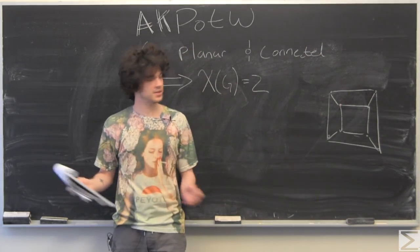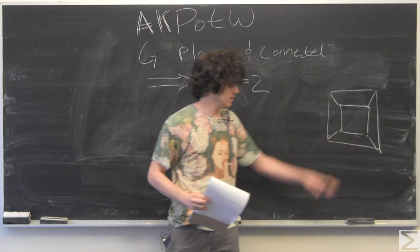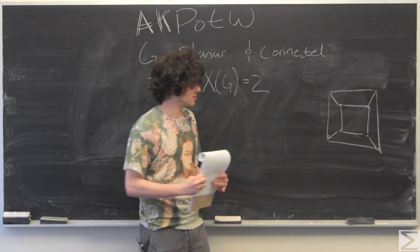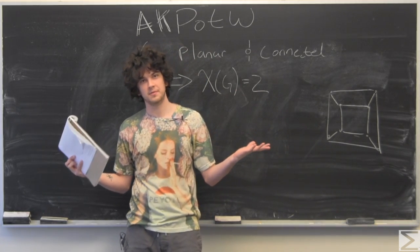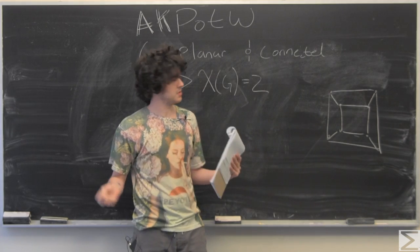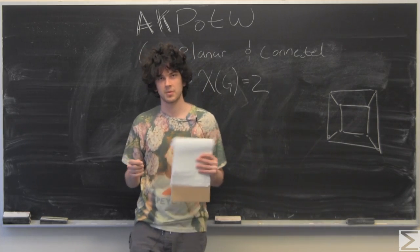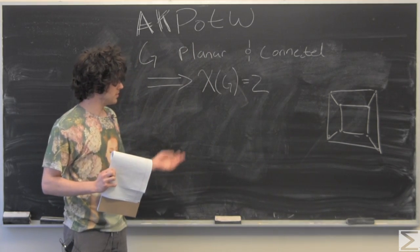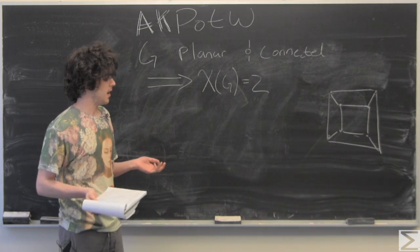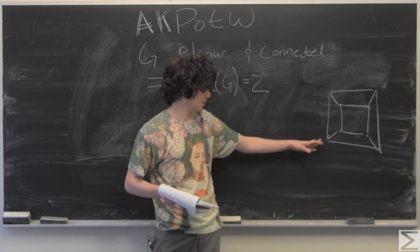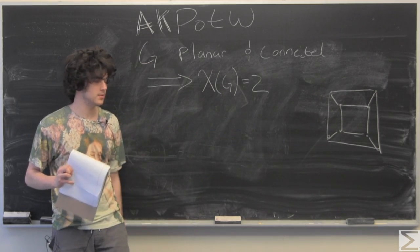Here's our flattened-out cube. One thing to note is that there's a face here, here, here, here, and here. There's also a face that we stretched out to infinity as we unfolded it, so we're going to think of a face being outside the perimeter there. You can add up the vertices, subtract the edges, and add up the faces. Indeed, the Euler characteristic chi of this graph is going to be equal to 2.